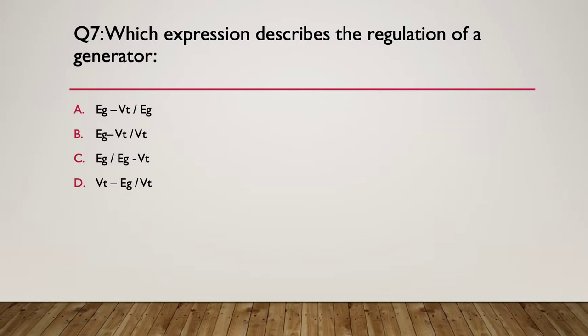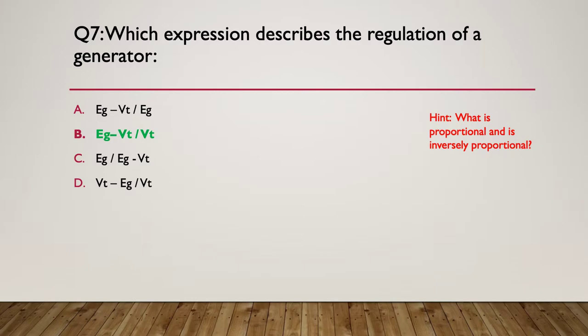Question seven: which expression describes the regulation of a generator — in other words, what's the formula for the regulation of a generator? Think about what is proportional and what is inversely proportional. The answer is B: it's the voltage across the armature (EG) minus the voltage at the terminal, divided by the voltage at the terminal. This gives you the regulation because you're working out how much the voltage will drop.